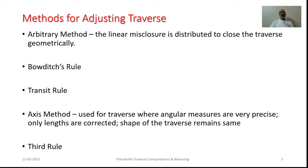If we refer to literature, in order to balance and adjust the traverses, there are several methods. For example, we can go for the arbitrary method, we can go for Bowditch rule, we can go for transit rule, we can go for axis method, and we can go for third rule.